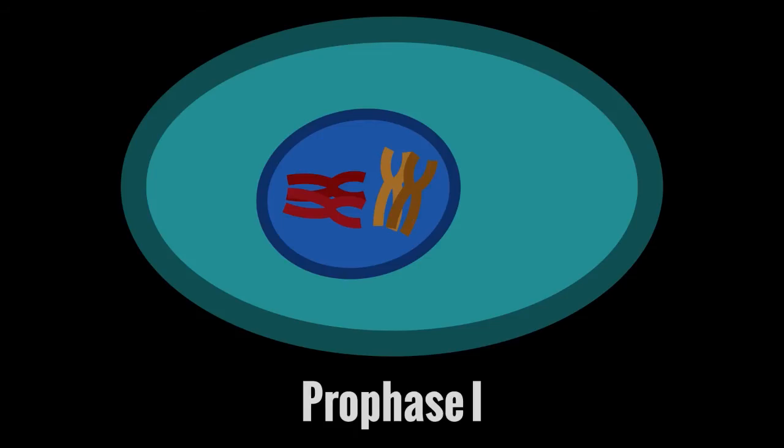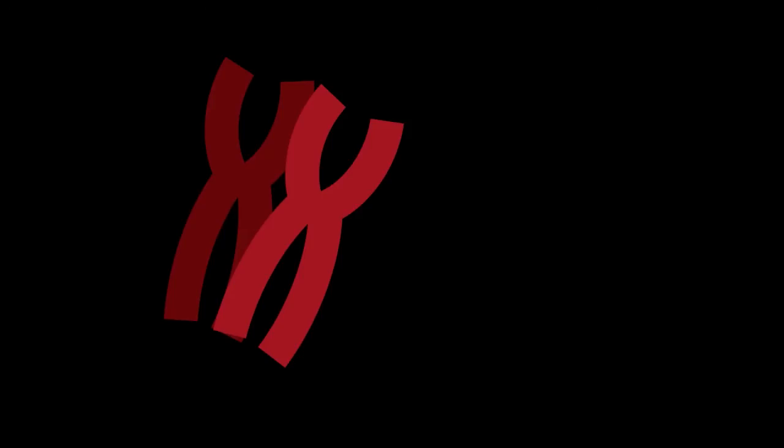It happens during prophase 1 of meiosis. During prophase 1, the DNA has replicated and condensed into chromosomes that are sticking together. When they stick together it's called synapsis, and these stuck-together chromosomes are called tetrads. Crossing over is when one chromosome in the tetrad exchanges DNA with the other chromosome.